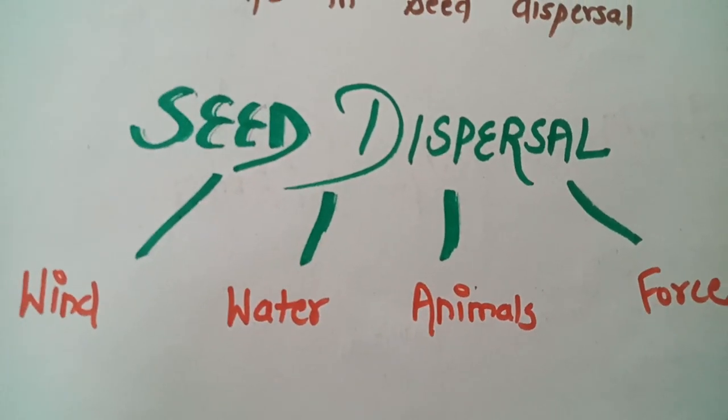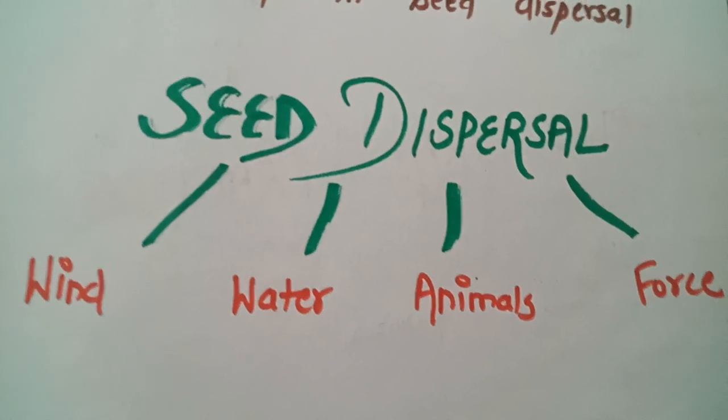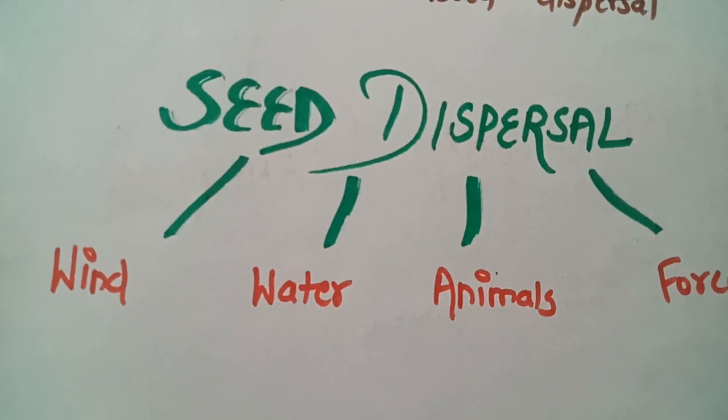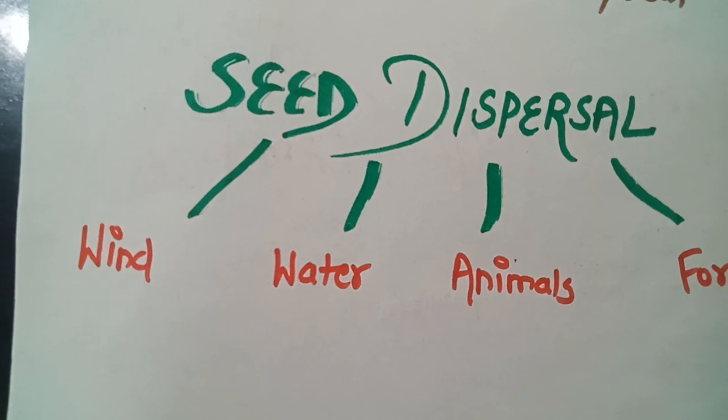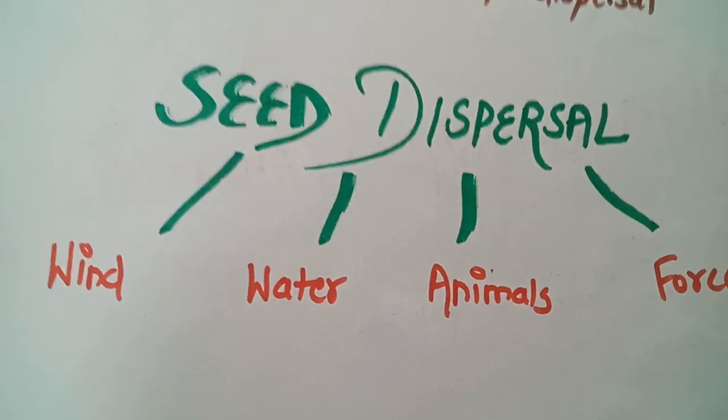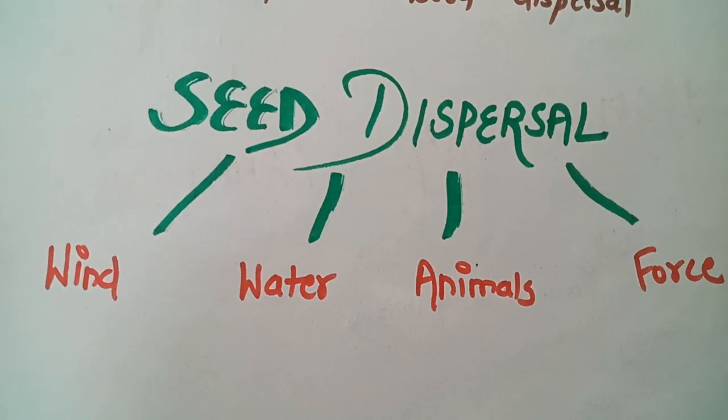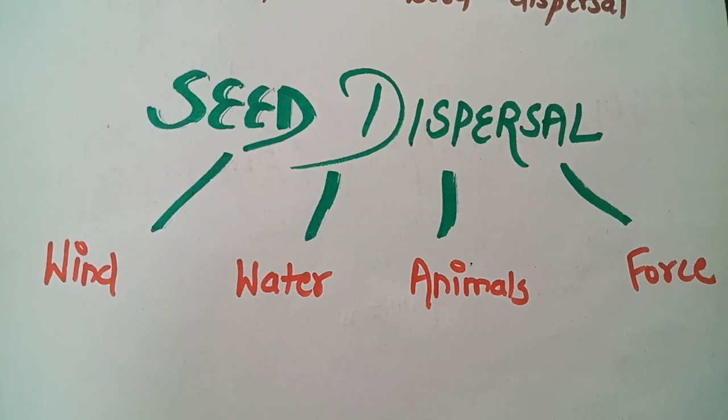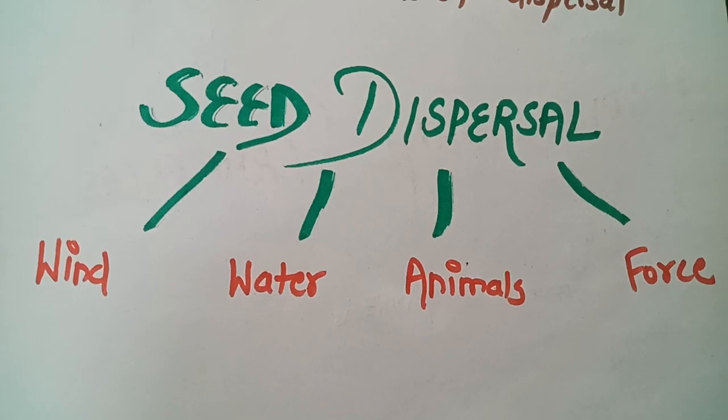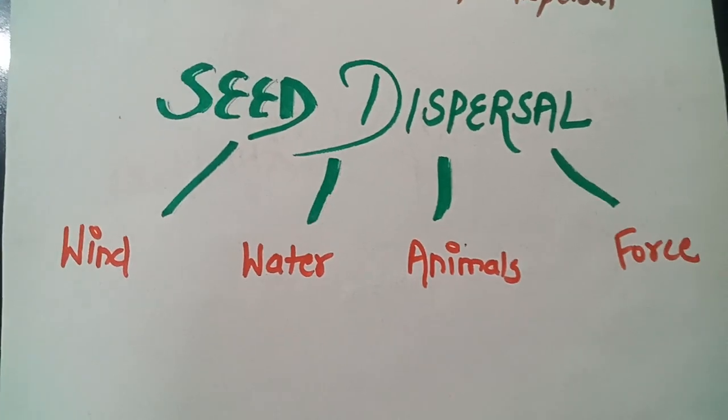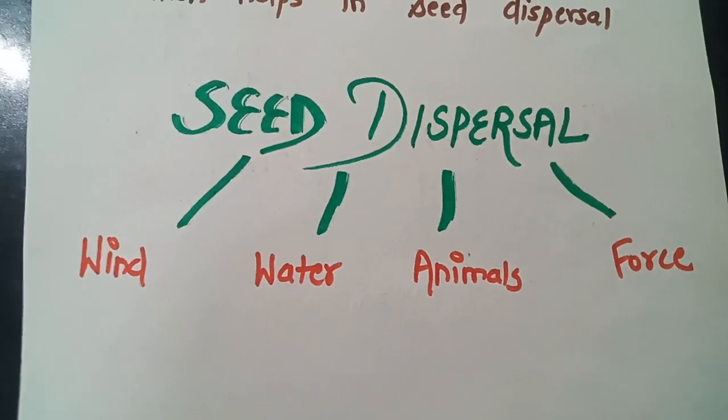Now seed dispersal is our next topic. The process by which seeds travel away or scattered away from the parent plant is known as seed dispersal. And seed dispersal is really very important for growing more and more kinds of crops or you can say different varieties of products. We are having four kinds of seed dispersal over here.